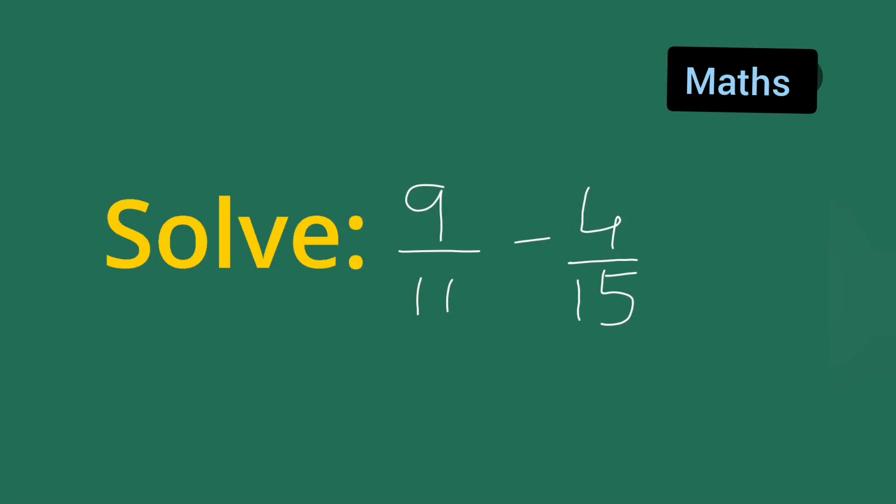So in today's class of mathematics, today's question is taken from class 7th mathematics. Solve 9 upon 11 minus 4 upon 15.